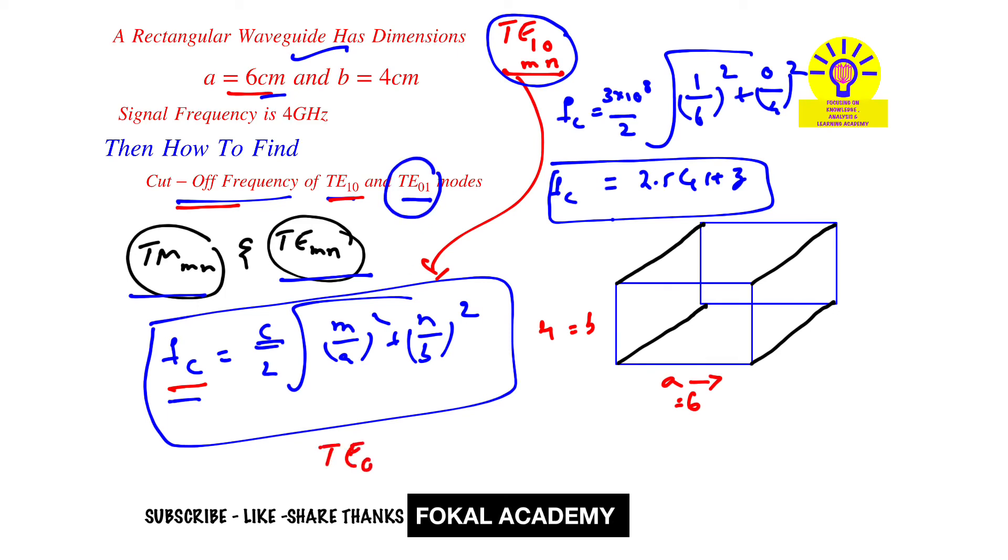Now, what is the cutoff frequency for TE01 mode? For TE01 mode, m = 0 and n = 1. So fc = (3×10⁸)/2 times the square root of (0/6)² plus (1/4)².